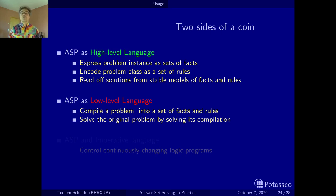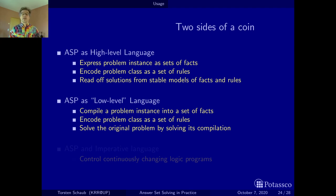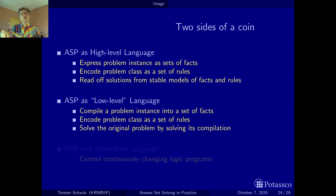You may actually adapt the latter approach in the following way: compile the problem not into a set of facts and rules, but just into a set of facts, and then still encode the problem class as a set of rules. A good example is planning. People are tempted to encode a planning operator like 'move' — with preconditions, effects, and other conditions — directly into a rule. Instead, the action should be compiled into a set of facts, and the encoding just describes how actions are applied.